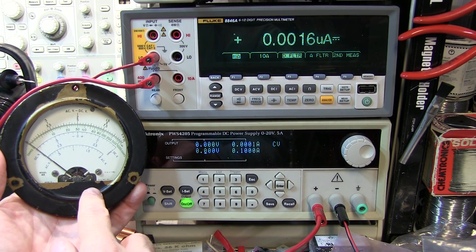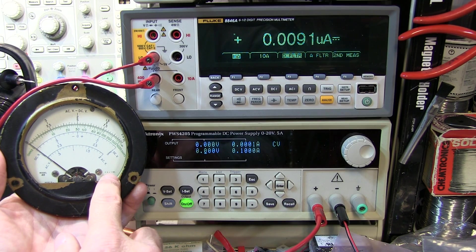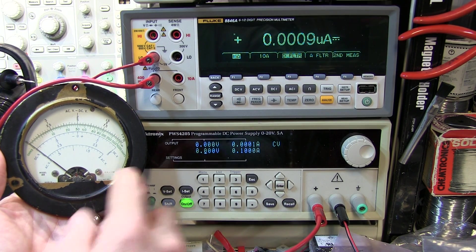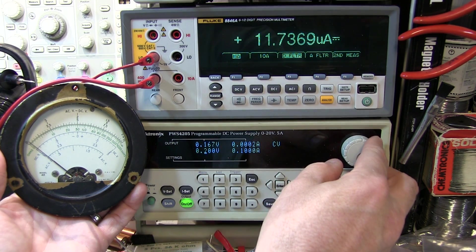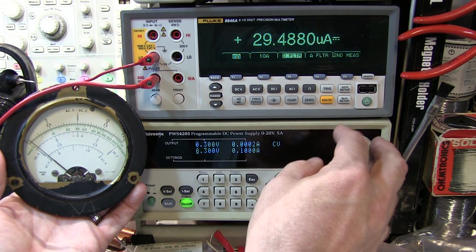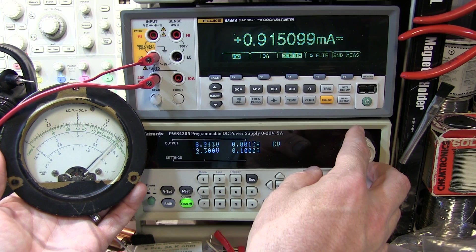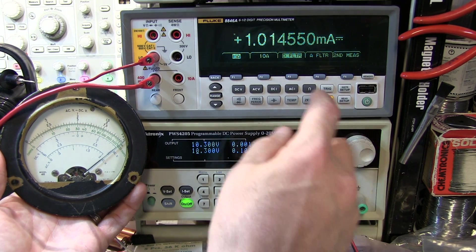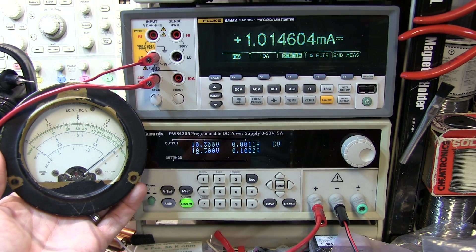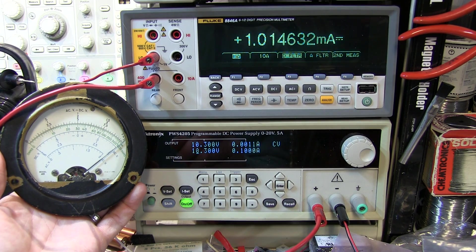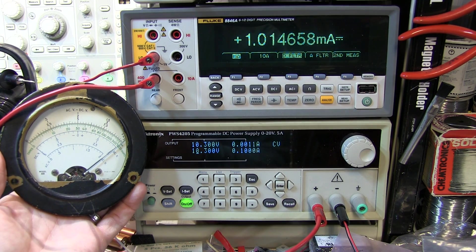When we examined this ancient meter earlier, we discovered that it said the full scale reading should be 1 milliamp. And we can actually go verify that, increment just in 1 volt steps here, and I can actually bring that up now to full scale. And we can see that full scale reading basically 1 milliamp. So even though this meter is probably older than I am, it's still in good working order.